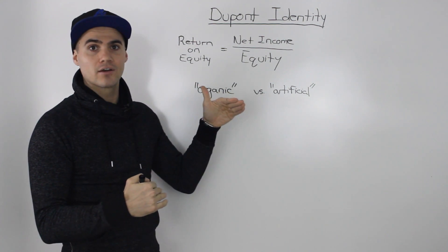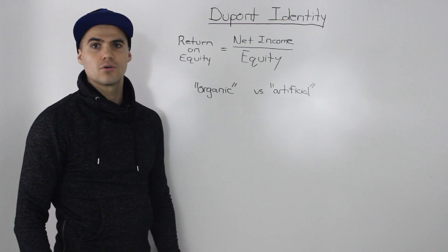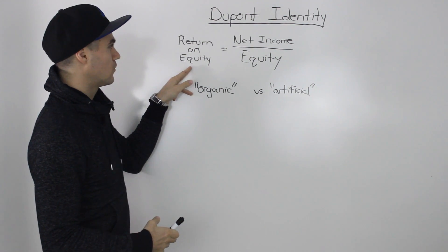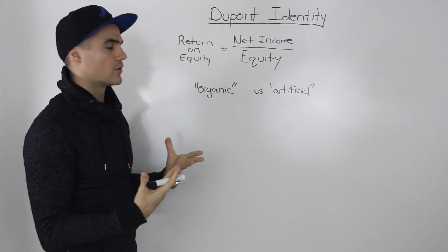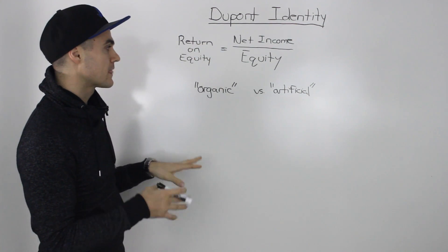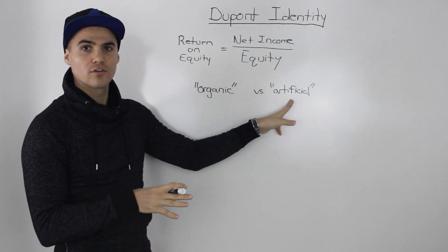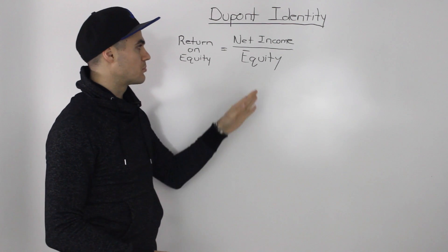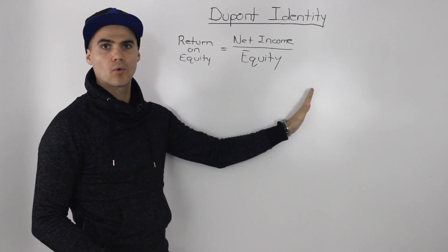With more debt, you can increase the return on equity. But the problem is that you increase your chance of bankruptcy because you have to pay higher interest to the bondholders. If you don't meet that higher interest, things are going to go badly. So the real question is: how can we know whether our return on equity — a very general ratio, net income over equity — is coming from organic sources or artificial sources? The answer is we have to break down this ratio into more components.